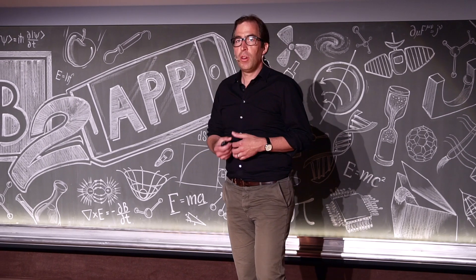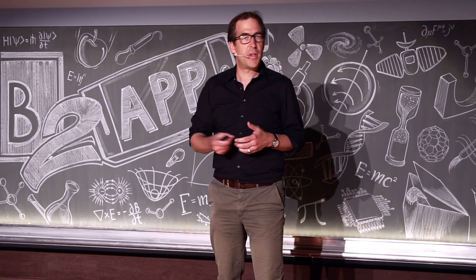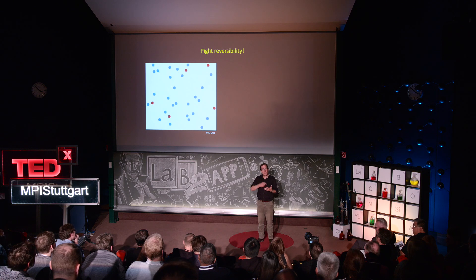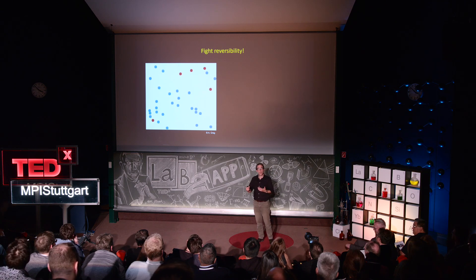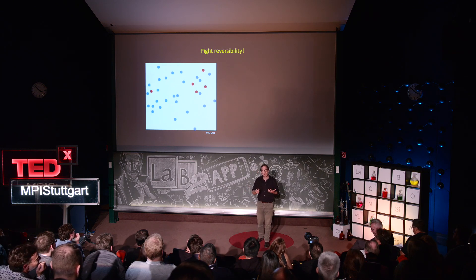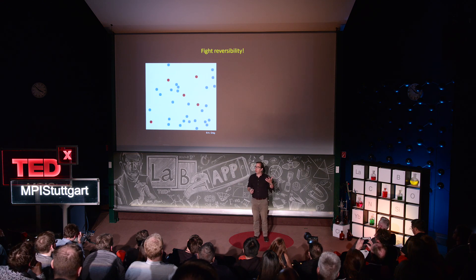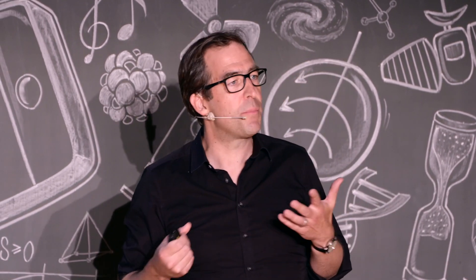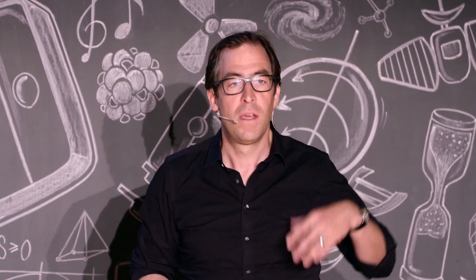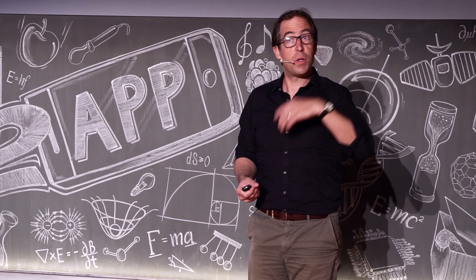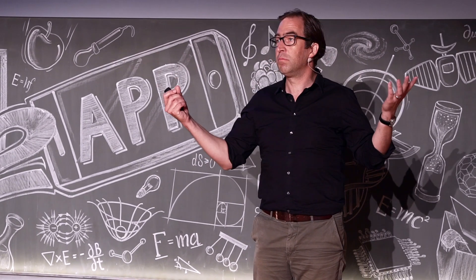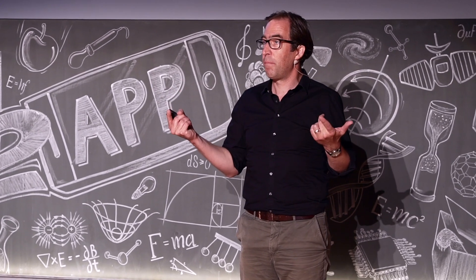If you look at the motion of particles, you might see something like this. They go in every direction with the same probability — left, right, back, forward. This results in the motion you might know if they have enough thermal energy, if there is enough heat to move. This is a very basic concept in chemistry called microscopic reversibility: for every process, there is a backward process, and in equilibrium these two compensate each other.